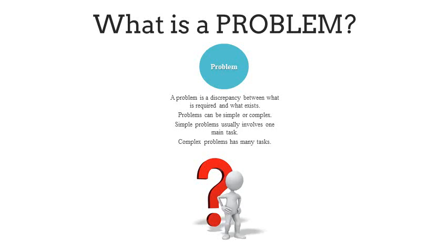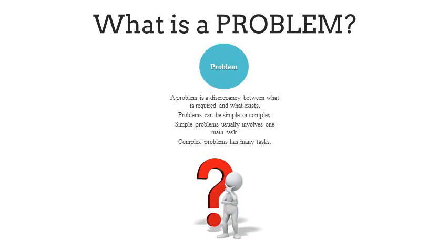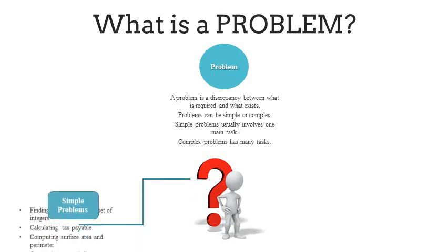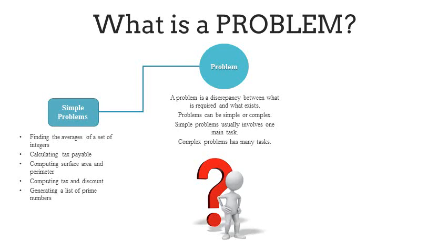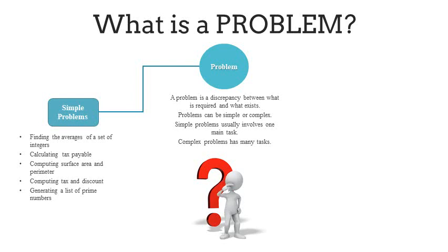Problems can be either simple or complex. A simple problem will usually have one main task you want to accomplish, whereas a complex problem would have many tasks. Examples of simple problems include finding an average of a set of integers, calculating tax payable, computing surface area and perimeter, computing tax and discount, or generating a list of prime numbers. All of these problems involve only one main task.